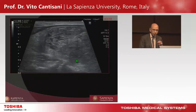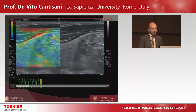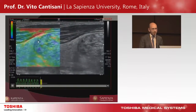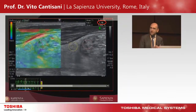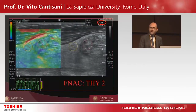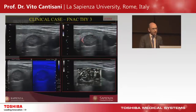Let's see a couple of examples. This is a large iso-hypoechoic, well-marginated lesion. We performed ultrasound strain elastography and obtained a strain ratio lesser than 2, consistent with the benignity of this lesion. We followed this patient and continue to do so.